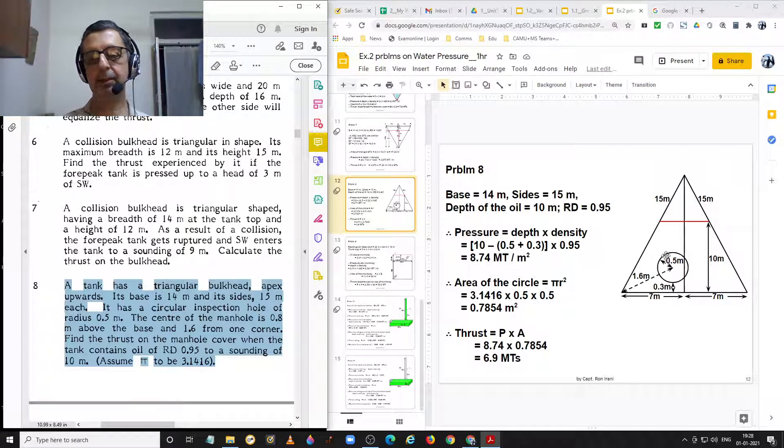There is a circular inspection manhole whose diameter is given to us to be equal to 1 meter or radius equal to half meter. The center of the manhole is 0.8 meters above the base. This is the radius and plus 0.3, this is 0.8 meters above the base. The center of the circular manhole is 0.8 meters above the base. It is located at 1.6 meters from one of the corners of the triangle. So, let us work this out.